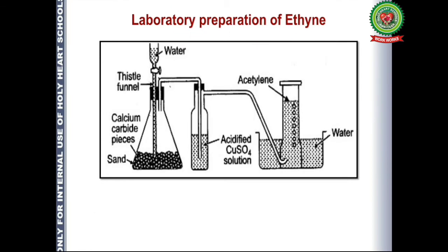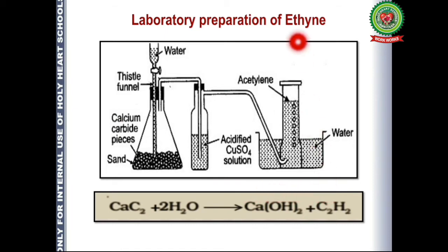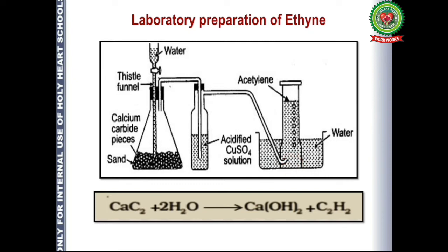Now let us start with the laboratory preparation of ethyne. For preparing ethyne, we use calcium carbide (CaC₂), dissolved in water. This gives calcium hydroxide and C₂H₂, which is ethyne gas. It is collected by downward displacement of water because it is slightly soluble in water and lighter than air.